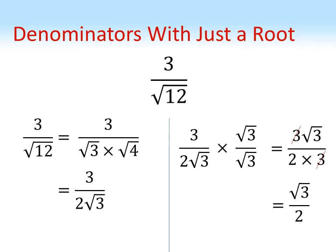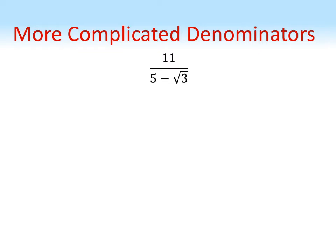Sometimes you might need to rationalize the denominator on a more complicated fraction such as this one: eleven over five minus root three. In this example we can't just times top and bottom by root three because we'd still end up with a five root three on the bottom - it's not very helpful. What we do instead, we consider something called the conjugate of the denominator. So here we've got five minus root three. The conjugate just switches that minus to a plus: five plus root three.